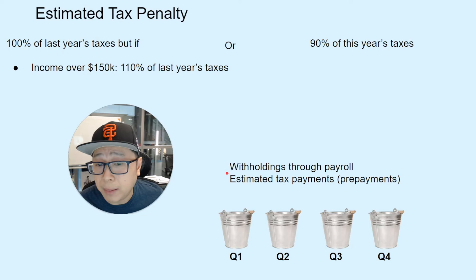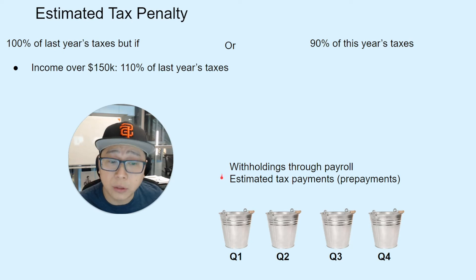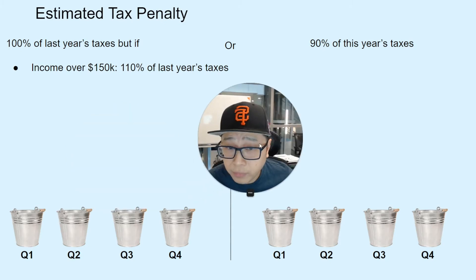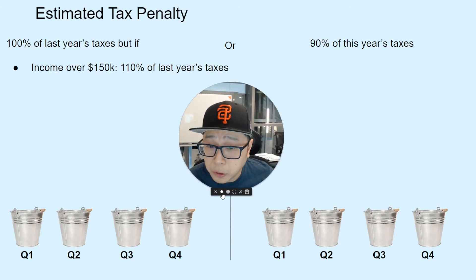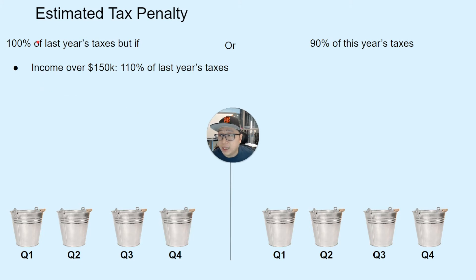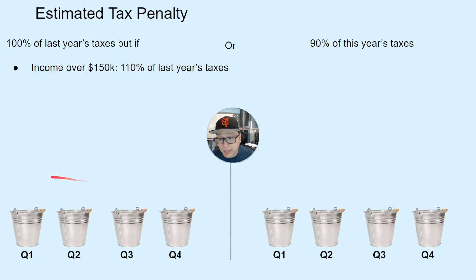You can make the payments through withholdings or through estimated tax payments. The other rule is that you could take 100% of last year's taxes — this is the last year's rule — and calculate that into the buckets.